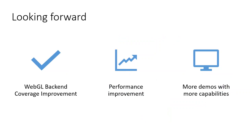We are continuously improving ONNX Runtime Web and welcome community contributions. Here are three major areas for further improvement. Currently, the WebGL backend supports limited ONNX operators. To improve model coverage, we are not only adding more operators but also working on enabling fallback from the WebGL backend to the WebAssembly backend. Secondly, there are still opportunities to further optimize ONNX Runtime Web, including both performance and memory consumption. WebNN is one promising technique ONNX Runtime Web could leverage in the future, and some experimental results have already shown very promising performance gains. Lastly, we are going to work on more demos, since demos help showcase ONNX Runtime Web capabilities and help users ramp up quickly.